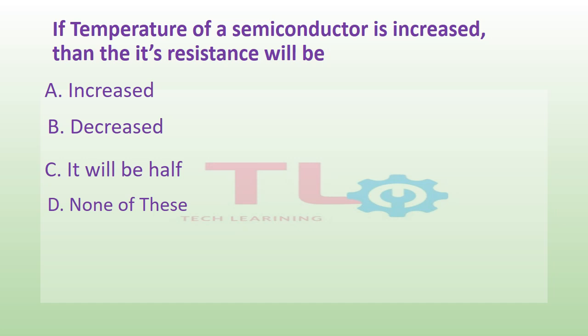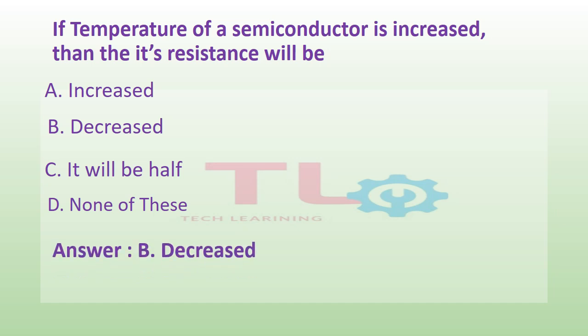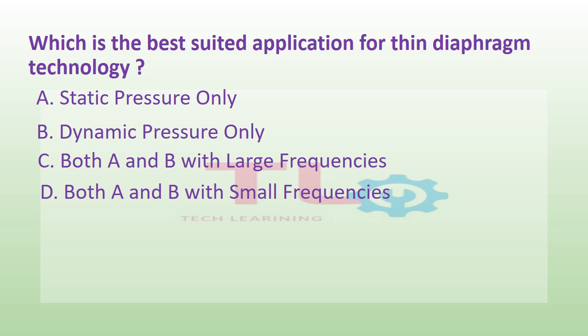If the temperature of a semiconductor is increased, then its resistance will be: Option A: increased. Option B: decreased. Option C: it will be half. Or option D: none of these. And the answer is option B, decreased.